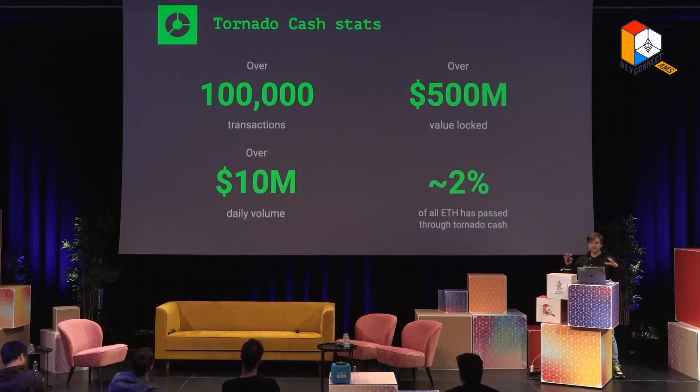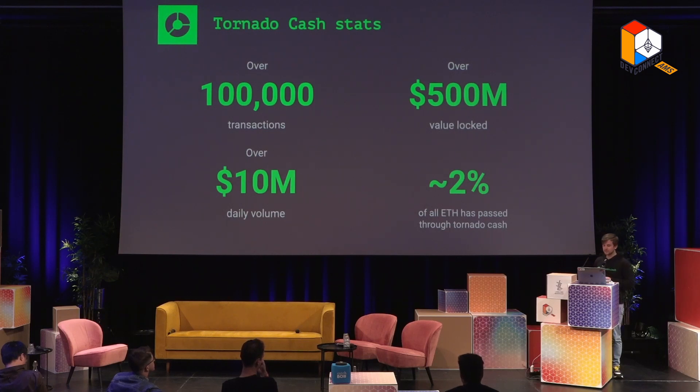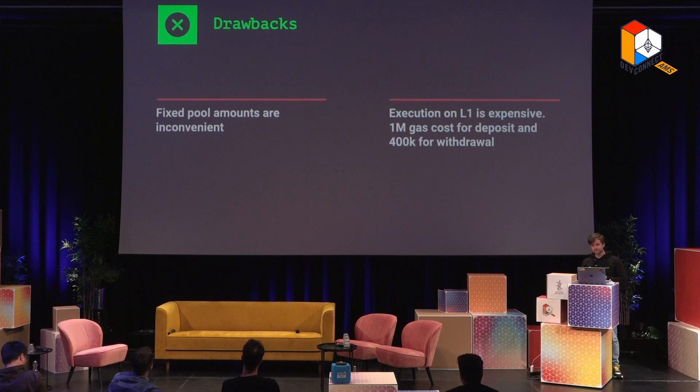The task is being addressed. The first step was Tornado Cash — we call it Classic. It has over 100,000 transactions on mainnet, and 2% of all Ether passed through Tornado Cash, so it's pretty impressive. But there are some drawbacks: it has fixed pools of a certain amount of Ether. It's also very expensive because it lives on L1 and requires one million gas to deposit, and a bit less for withdrawal. For many users, the price of privacy is too high.